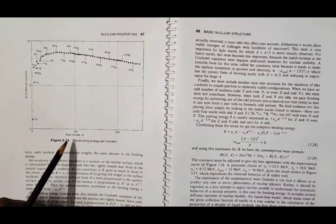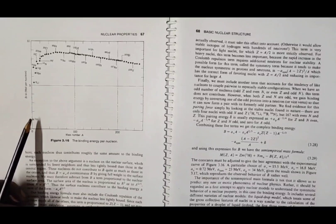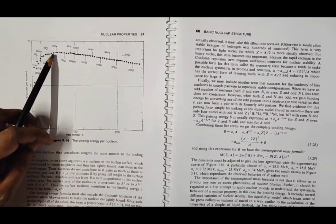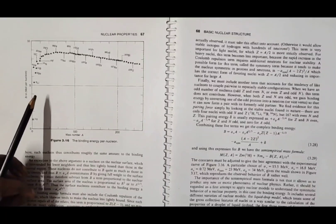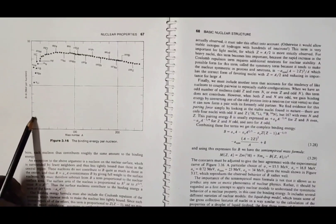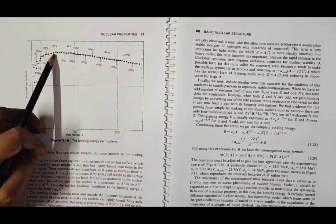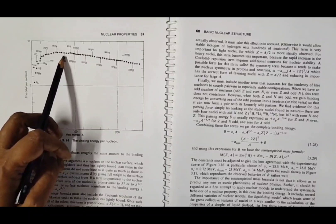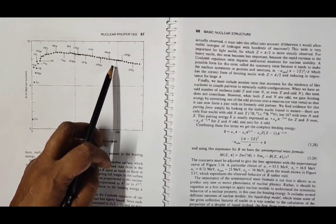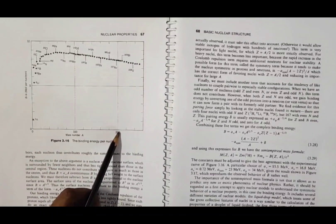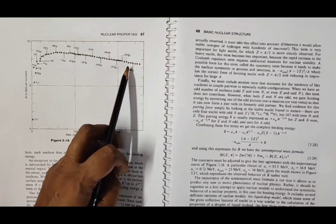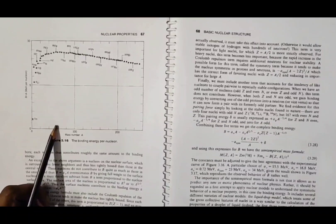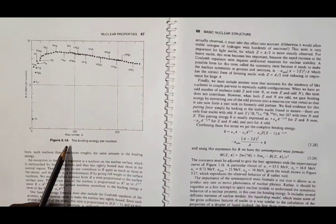This is a typical binding energy curve with various nuclides plotted on it. Starting from the hydrogen nucleus up to around iron with mass number A equal to 56, the curve shows an increase in binding energy per nucleon with mass number. After that, the curve shows an almost constant value for binding energy per nucleon. After A equal to 200, it shows a decrease in binding energy per nucleon. The graph thus predicts the possibilities of nuclear fusion and fission on the basis of nuclear binding energy.